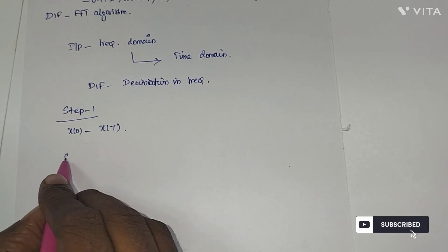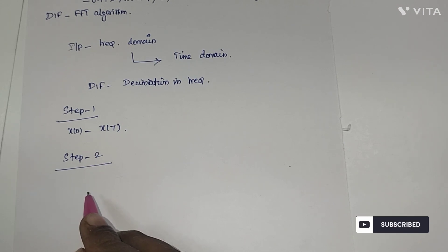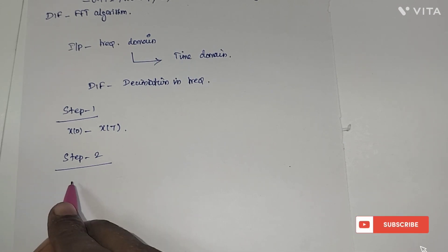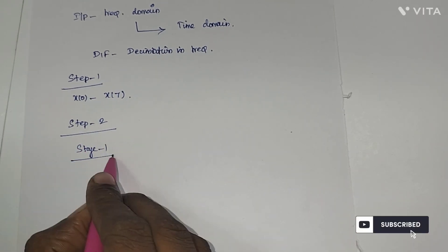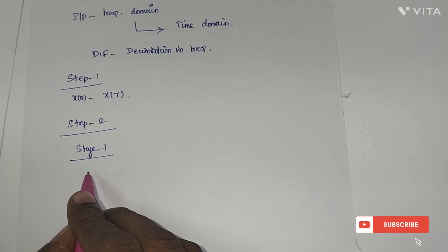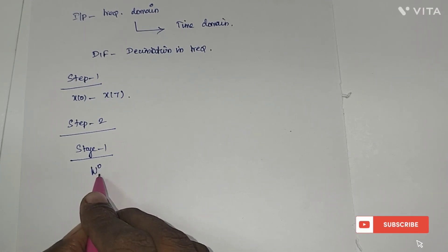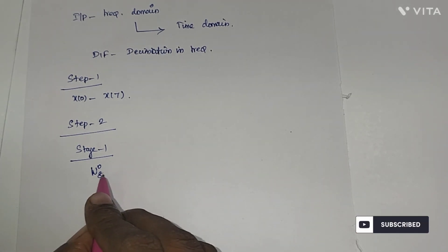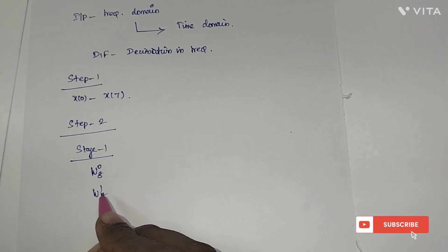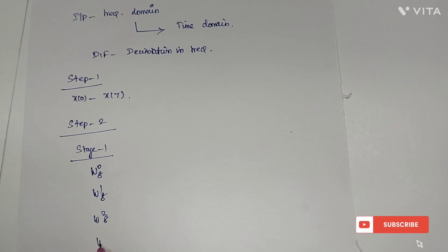Step two is to compute the DFT for the input sequence. There are three stages. In stage one, we compute the eight-point DFT. The twiddle factors used in the eight-point DFT are W0_8, W1_8, W2_8, and W3_8.